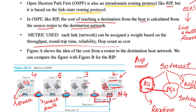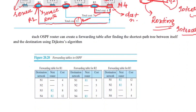If router R3 wants to reach the destination network N4, the cost is 4. If R2 wants to reach N4, it goes via N3 (cost 3) then N4 (cost 4), totaling 7. If R1 wants to reach N4, it travels via N2 (cost 5), then N3 (cost 3), then N4 (cost 4), totaling 12.